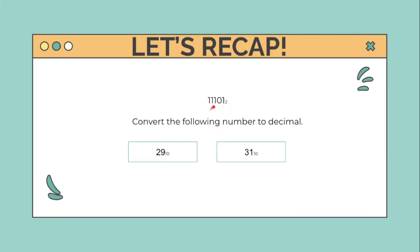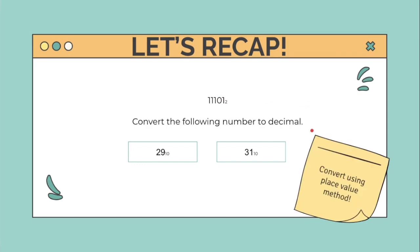Next, convert 11101 base 2 to decimal. You have five seconds to solve the question. To convert a binary number to decimal, we use the place value method. The answer is 29 base 10.